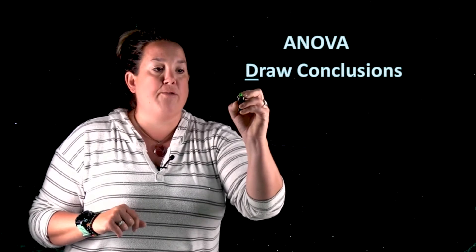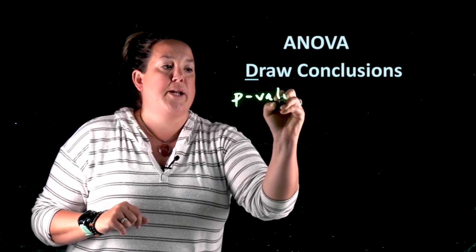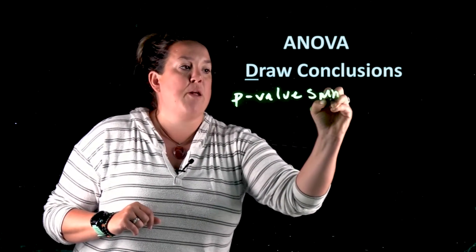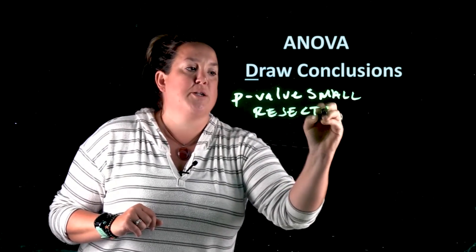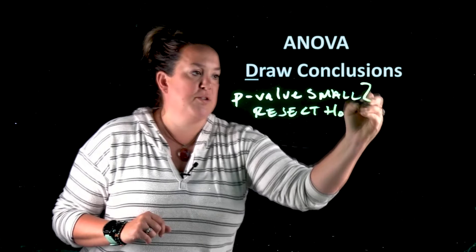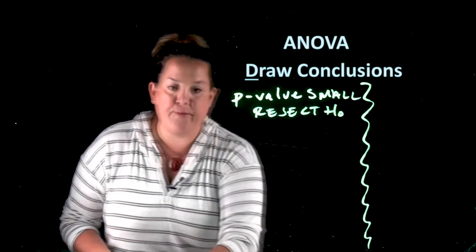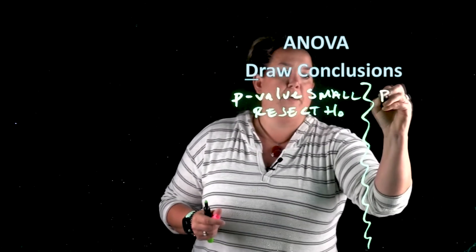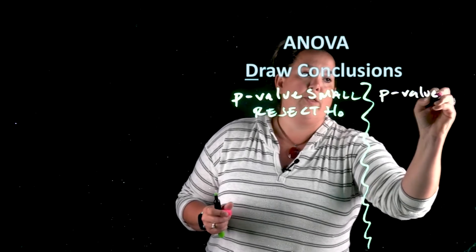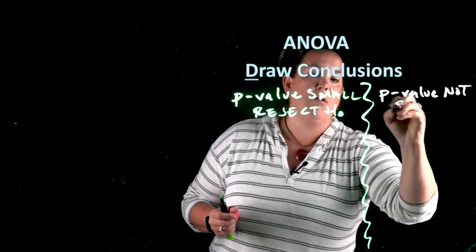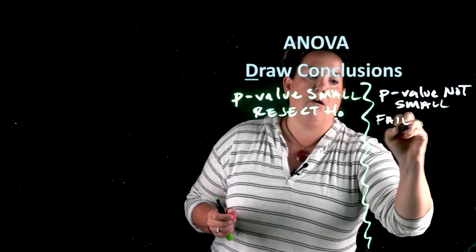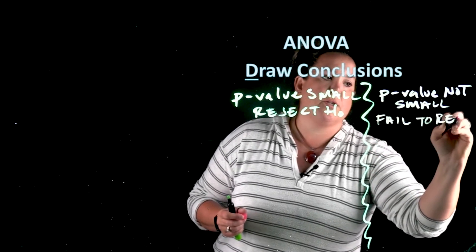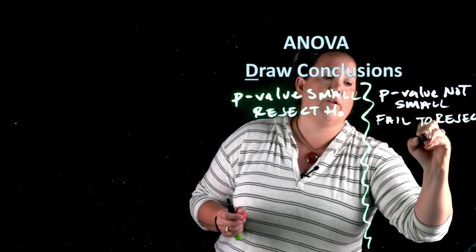We have the option of having a p-value that is small, and then we've said that in that situation you reject the null. Okay so that's the first option. And the second option we've had is having a p-value that is not small.